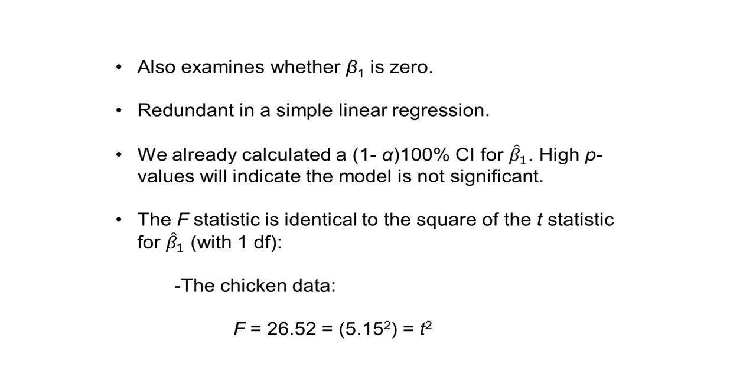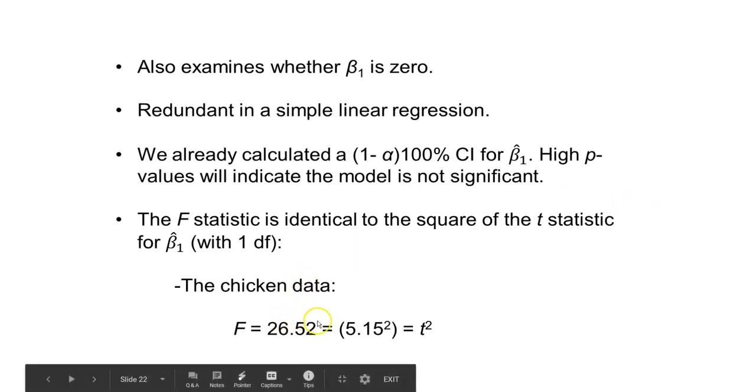The other thing you can do is also examine whether or not beta 1 is zero. This is kind of redundant in simple linear regression. We already calculated a confidence interval for beta 1 hat, and we know that high p-values will indicate the model is not significant. The F-statistic is identical to the square of the T-statistic for the slope for that beta 1 hat variable, whenever there's one degree of freedom. So as an example, if you look at the chicken data, if we calculated the value for F in the ANOVA table as 26.52...